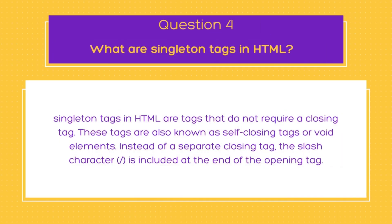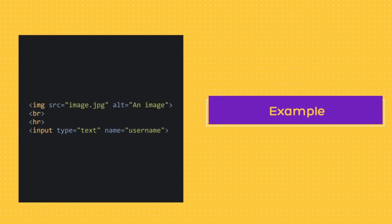The next question is very common in interviews: what are singleton tags? Singleton tags in HTML are tags that do not require a closing tag. These are also known as self-closing tags or void elements. Instead of a separate closing tag, the slash is included at the end of the opening tag. For example, the image tag is a singleton tag used to insert images, and the br tag is a singleton tag used to create line breaks.